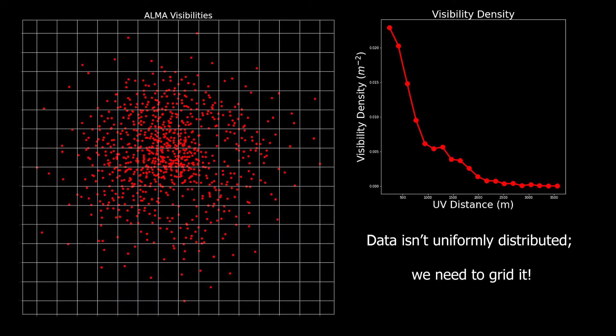When gridding, you have a choice of how to weight the individual visibilities within each grid cell. The choice you make will affect the properties of the final image.